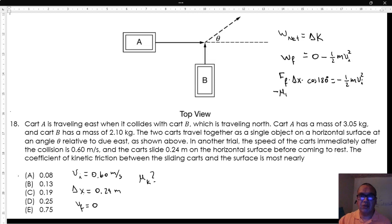Therefore, we have mu k times m g times displacement is equal to negative one half mass initial speed squared.